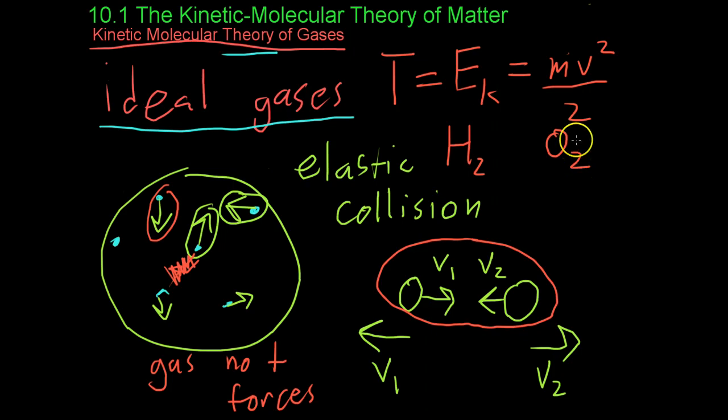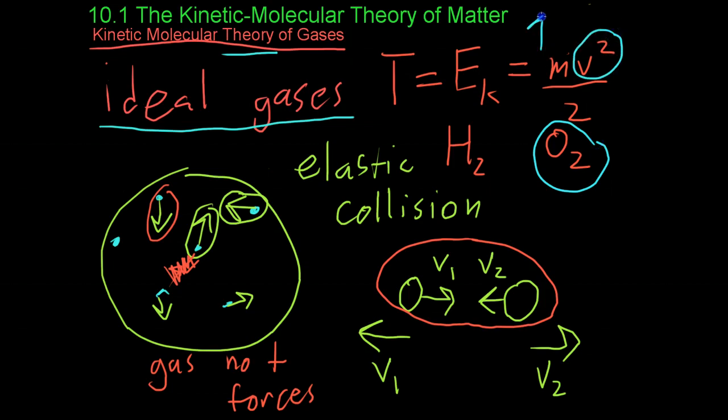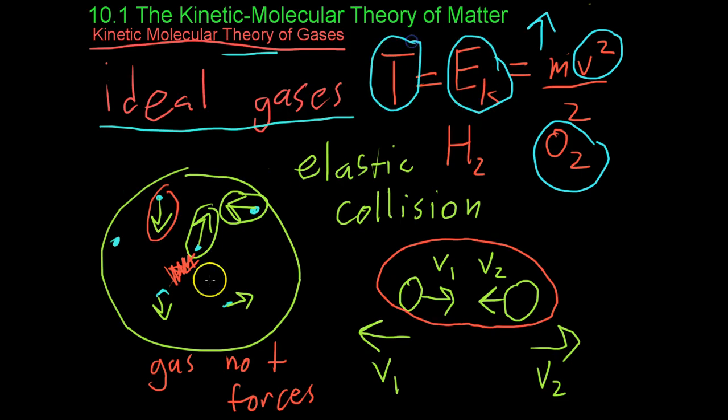Oxygen is much more massive than hydrogen. So, it's moving slower at the same temperature because its mass is higher. However, the kinetic energy is still the same at the same temperature for these two gases.